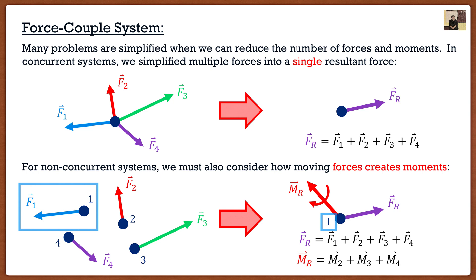In this particular case, I found the resultant force and moment about point one. And if we look to the left hand side here, we know that force one acts directly through point one. And we know that if a force acts through a point, it doesn't create any moment. That's why we don't have moment one here.